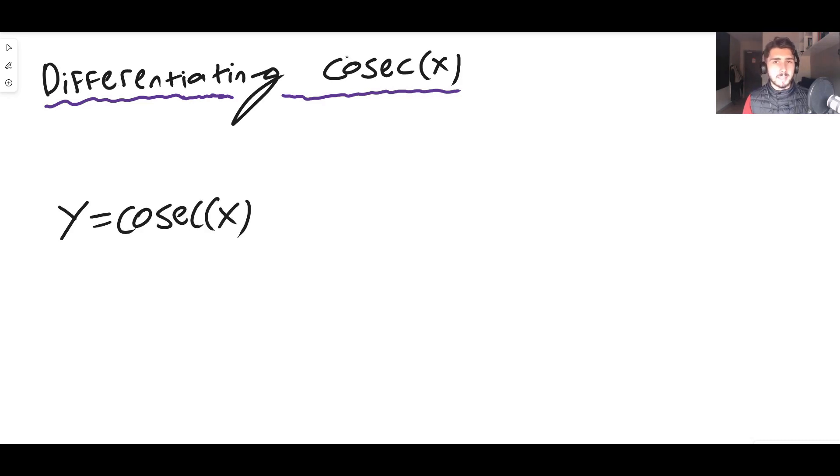We want to find dy/dx. That's the idea of this question. We don't know how to differentiate cosec(x) yet, so we can't just do it. We need to put it in a form that we do know how to differentiate.